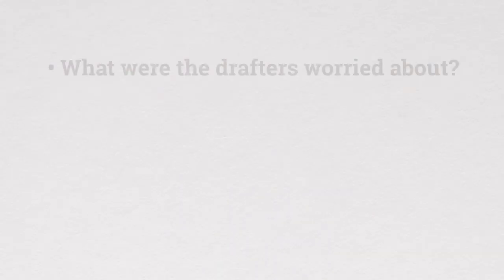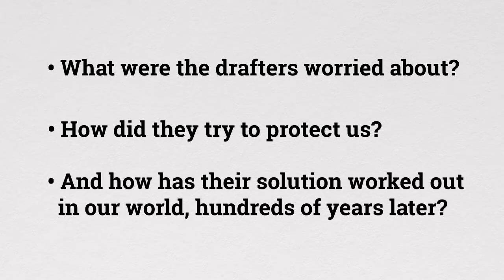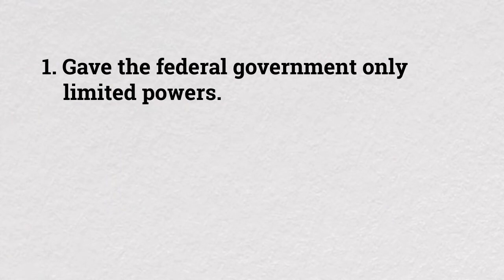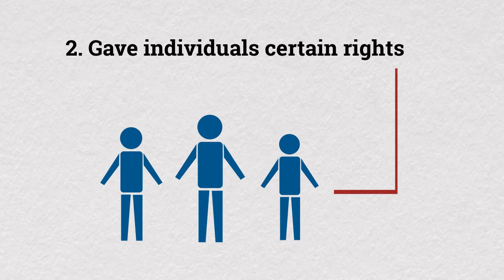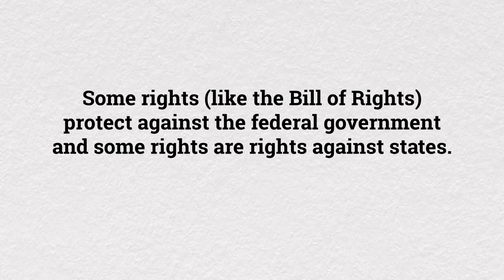What does the Bill of Rights do? When thinking about the Constitution, it helps to ask three questions: What were the drafters worried about? How did they try to protect us? And how has their solution worked out hundreds of years later? The drafters were worried about the federal government becoming a tyrant, like King George did, and they tried to protect us in basically three ways. First, they gave the federal government only limited powers and divided those powers among the branches. Second, they gave individuals certain rights — constitutional rights protect certain activities against interference from certain actors, usually the government.